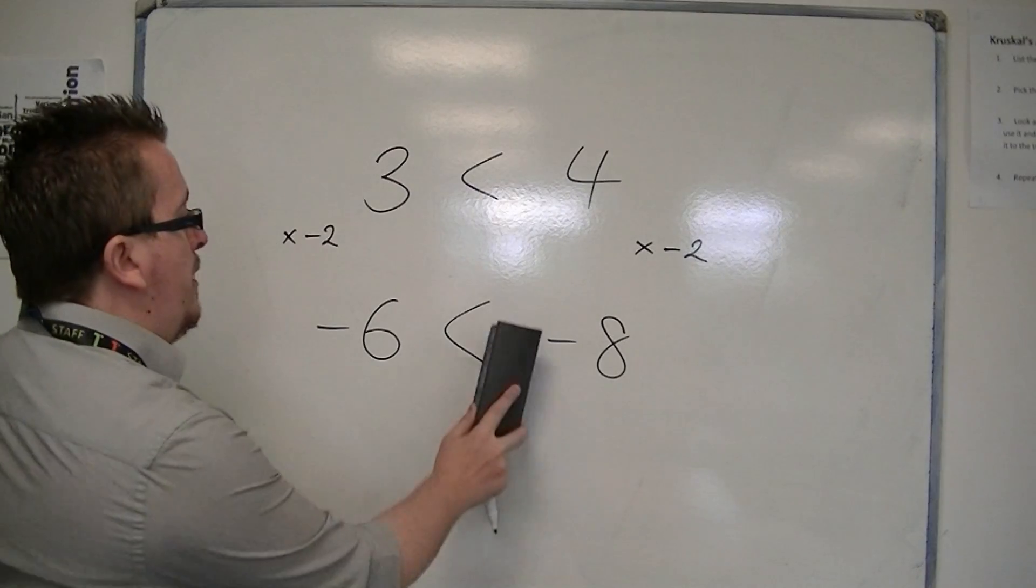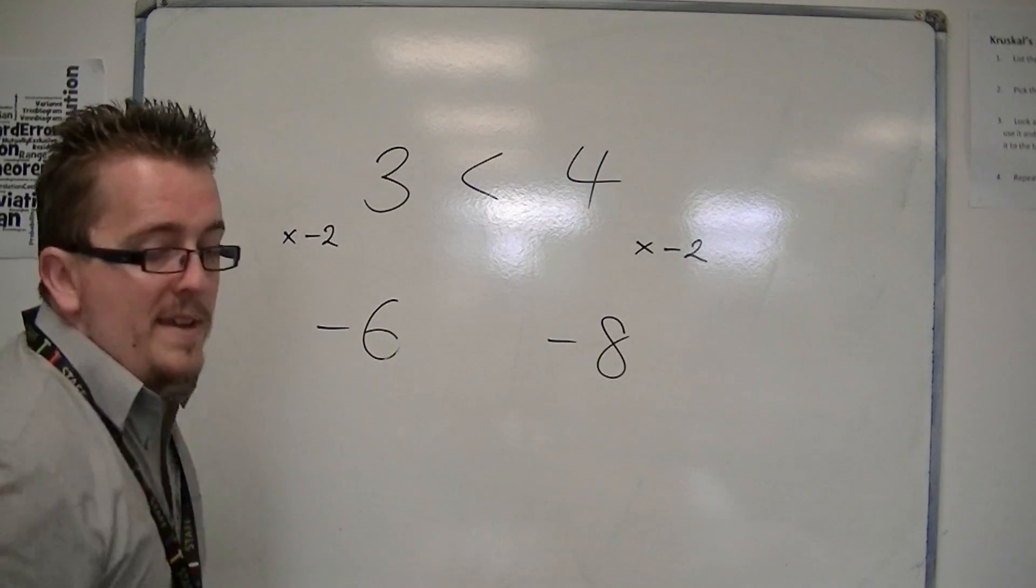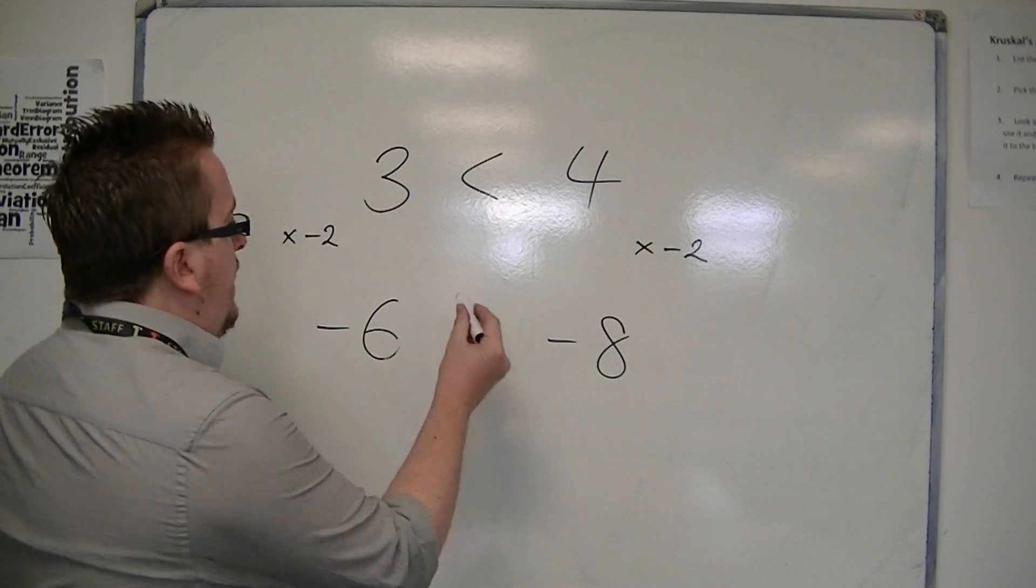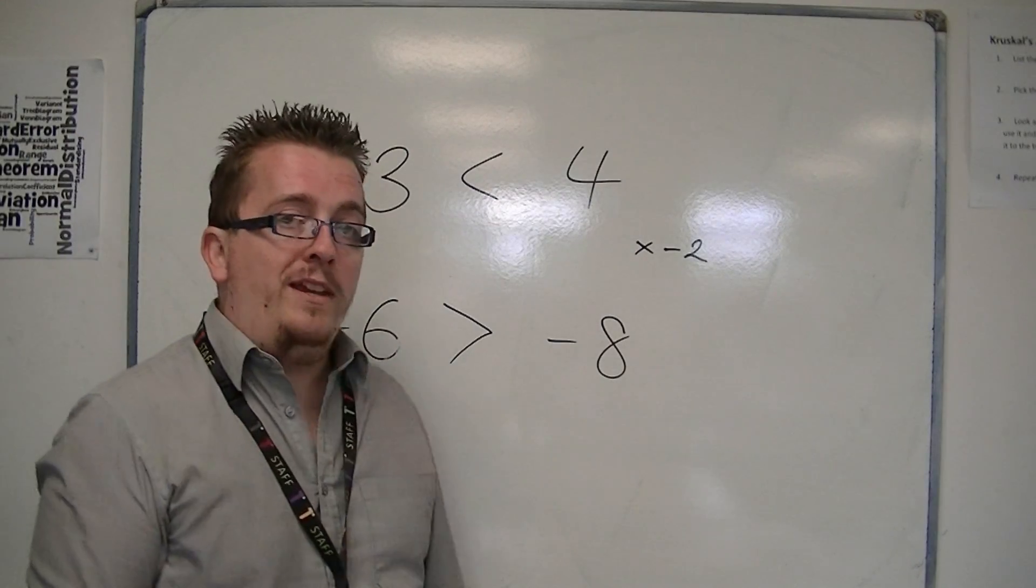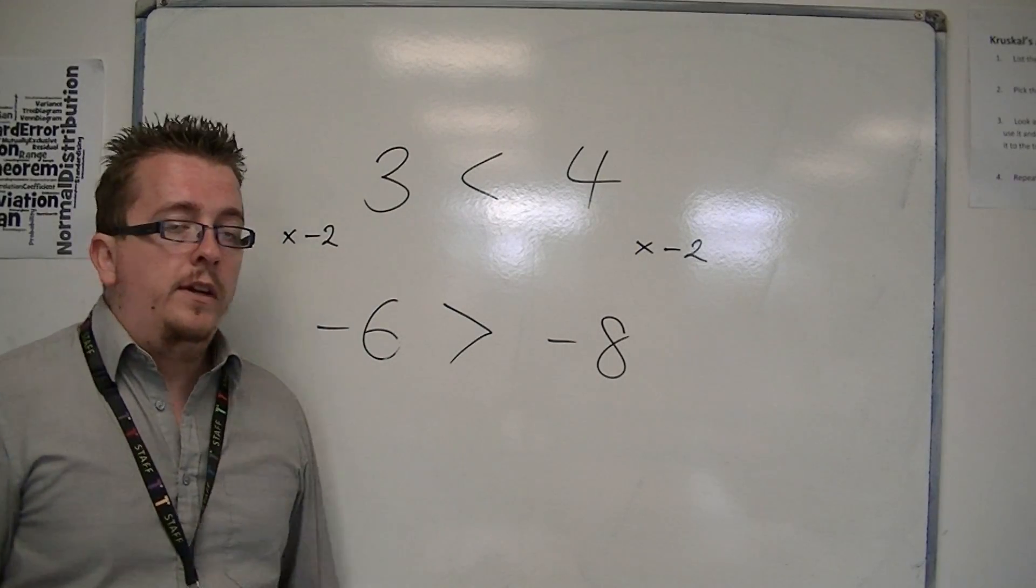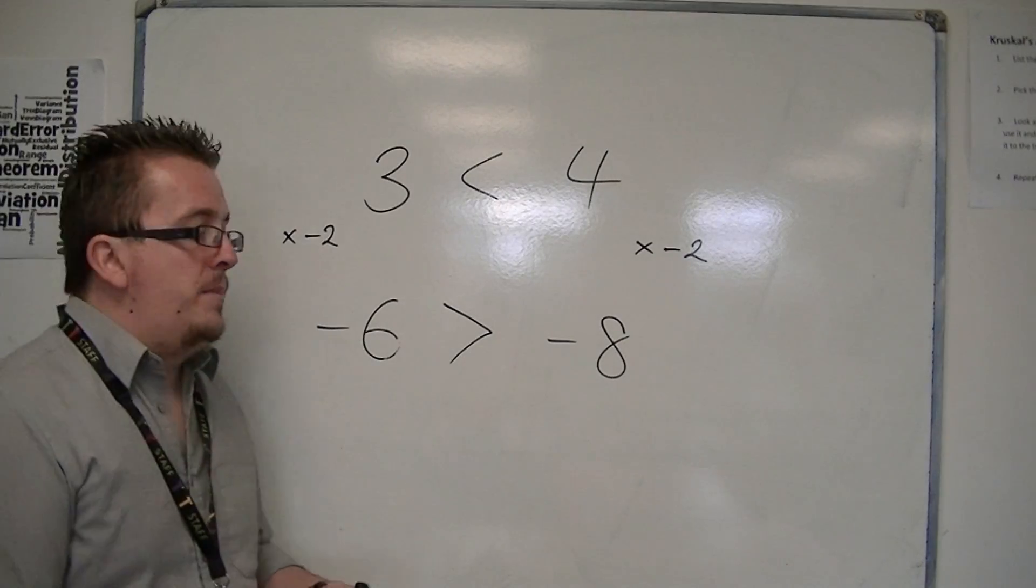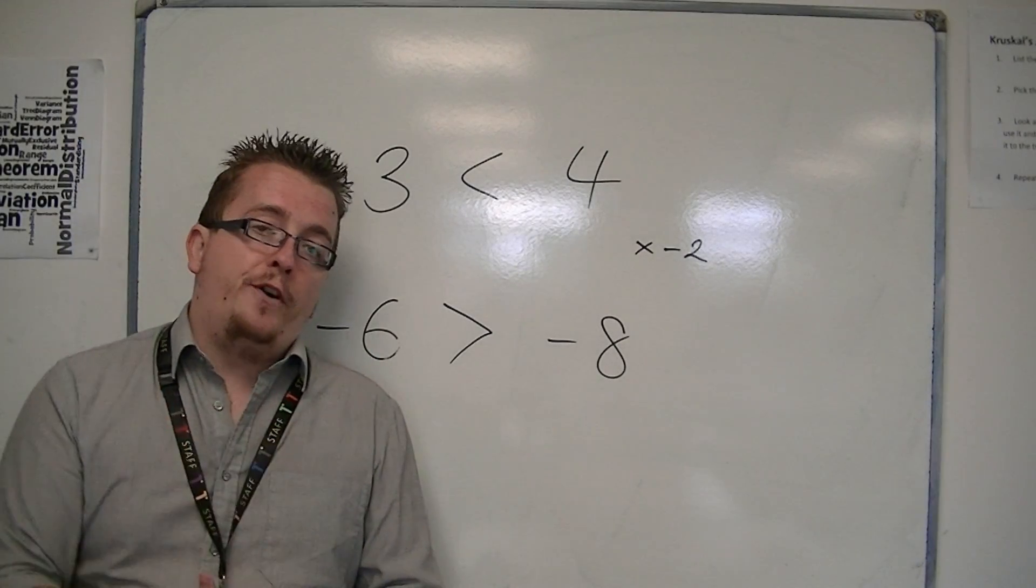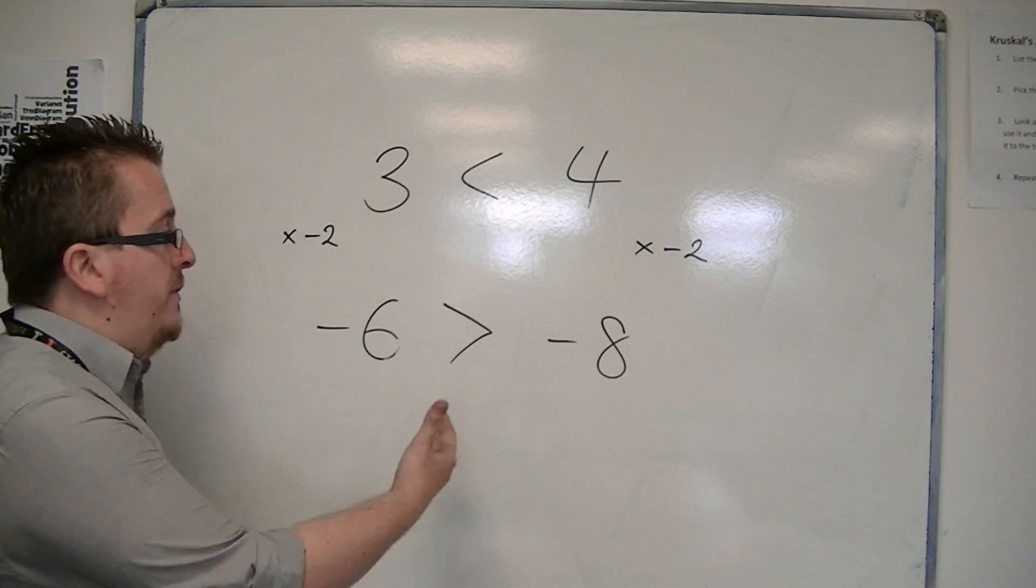So if you multiply both sides of an inequality by a negative number, the symbol must be changed. So minus 6 is now greater than minus 8. Any time you are multiplying or dividing by a negative number, the symbol must change.